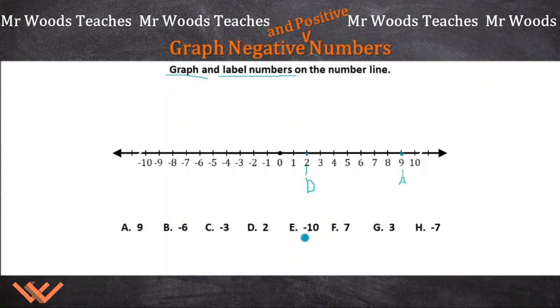Negative 10, positive 7, again, dot on the number line, and then I'm going to come down here and it's F.